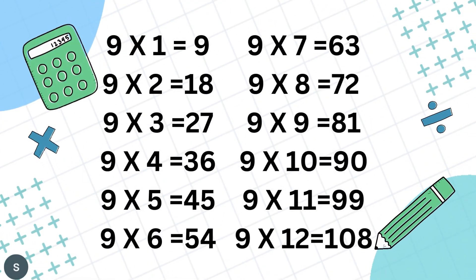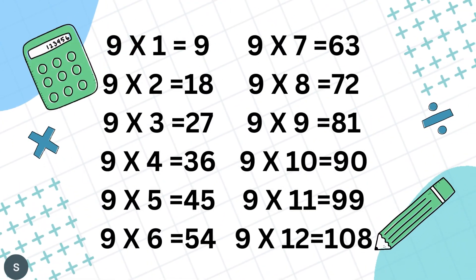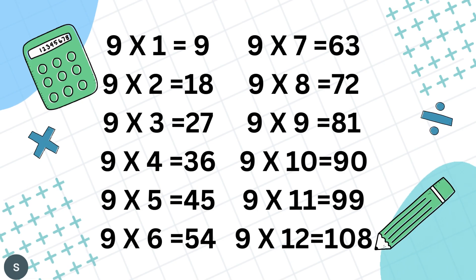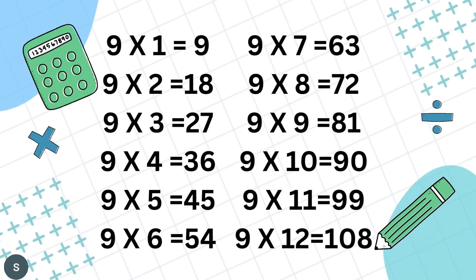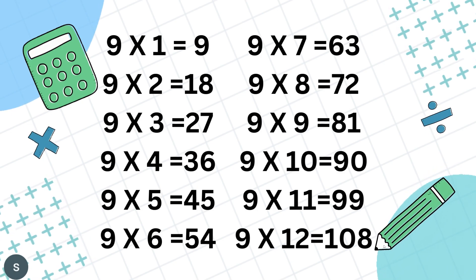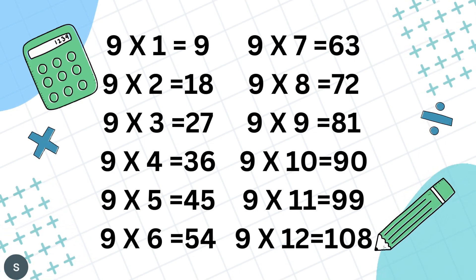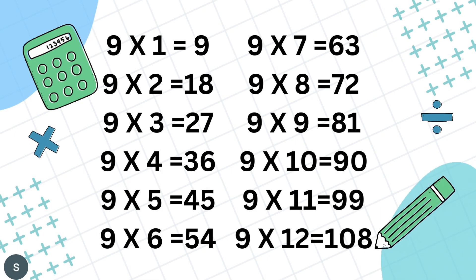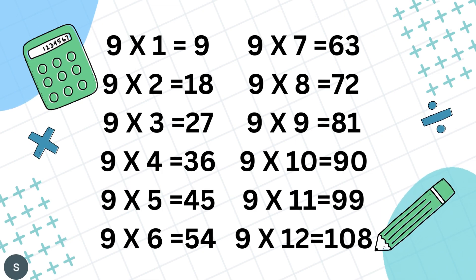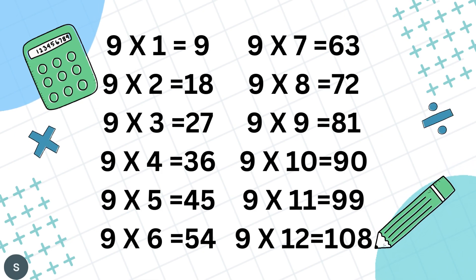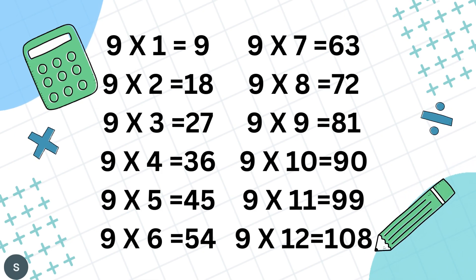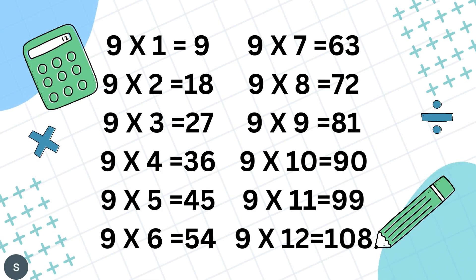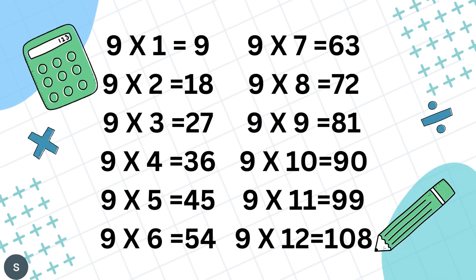Table of 9. 9 1's are 9, 9 2's are 80, 9 3's are 27, 9 4's are 36, 9 5's are 45, 9 6's are 54.